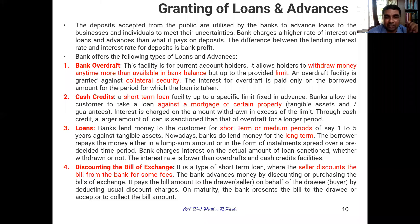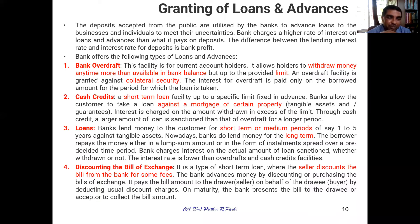These facilities — overdraft, cash credit, term loans, and discounting of bills — are all funded activities, meaning the bank's own money is involved. Therefore they are called funded sources. The bank charges a certain fee when it discounts a bill. These are the lending or funded activities of the bank.